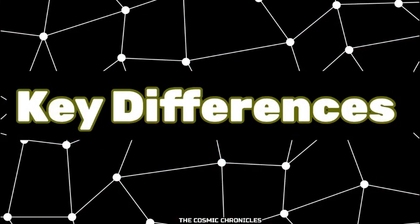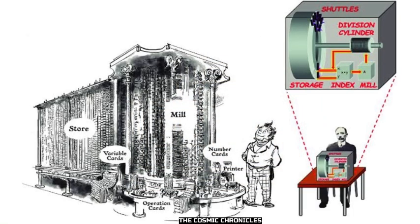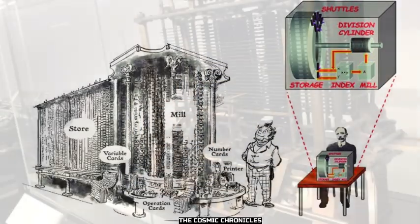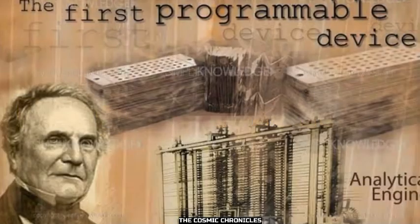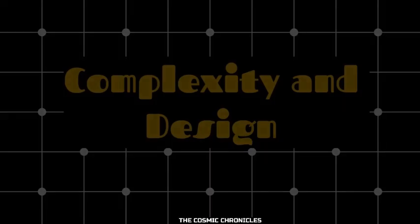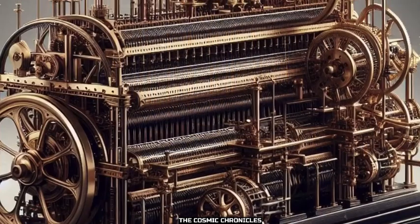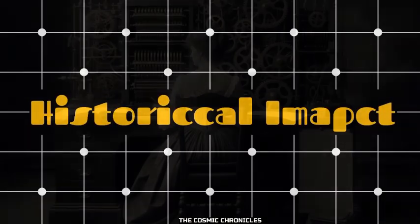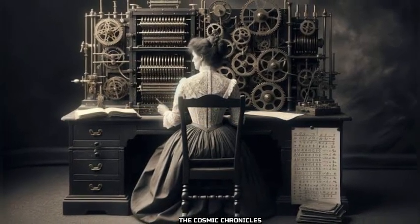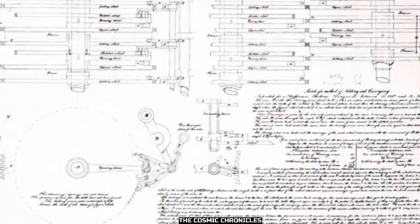Key Differences. Functionality: Difference Engine No. 1 was a specialized calculator, while the Analytical Engine was a general-purpose computer, and Difference Engine No. 2 was an enhanced calculator. Programmability: the Analytical Engine was programmable, making it more versatile than the Difference Engines. Complexity and Design: Difference Engine No. 2 was more complex than Difference Engine No. 1, reflecting Babbage's evolving design capabilities. Historical impact: the Analytical Engine's design introduced concepts that would become fundamental to modern computing, such as programmability and separation of memory and processing units.